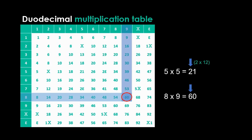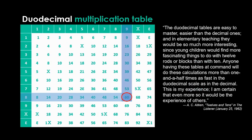It might seem like a lot of work, but that's just because you're used to decimal counting. Duodecimal advocate A.C. Aitken said of these multiplication tables, The duodecimal tables are easy to master, easier than the decimal ones, and in elementary teaching, they would be so much more interesting, since young children would find more fascinating things to do with 12 rods or blocks than with 10. Anyone having these tables at command will do these calculations more than 1.5 times as fast in the duodecimal scale as in the decimal. This is my experience. I am certain that even more so, it would be the experience of others. If you ask me, I think it's time people started to adopt the duodecimal scale by the dozens.